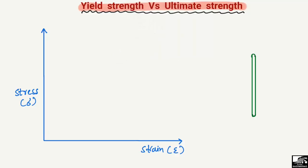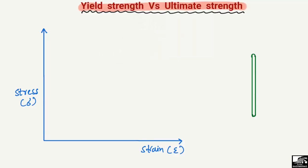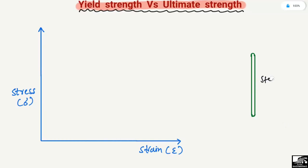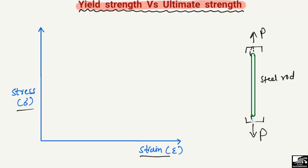To discuss the difference between yield strength and ultimate strength, let's consider a steel rod of any length. We will draw the stress-strain curve from this steel rod. Let's suppose we put this steel rod in a universal testing machine, and there is a tensile load P being applied on both sides of the steel rod.